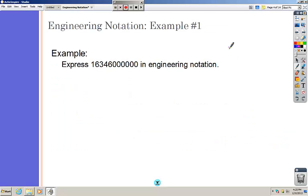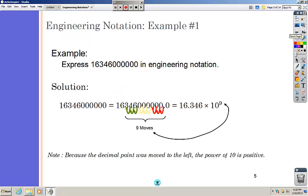So to do this, we need to move the decimals. We're going to start at the end where there's an implied decimal. We're trying to get between a number zero to 999. So I start moving and I'm counting. When I get to a digit of 9 and I've made a number between 0 and 999, I made 16.346 times 10 to the 9th. That number is positive because I moved to the left. There you can see my answer.